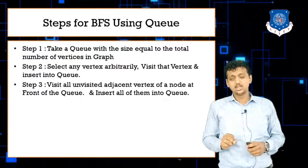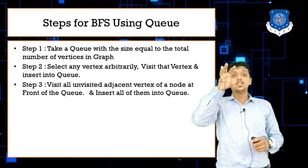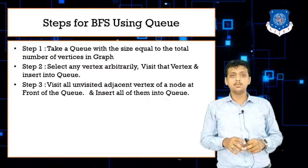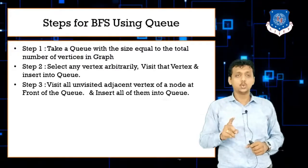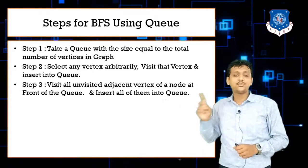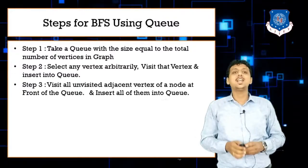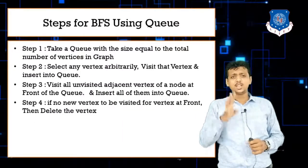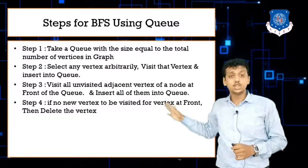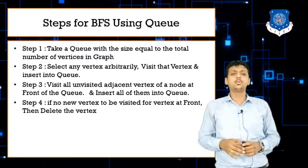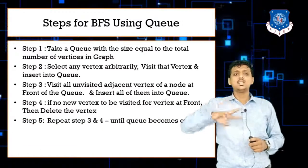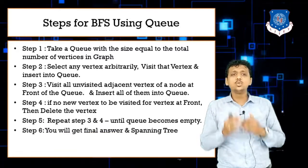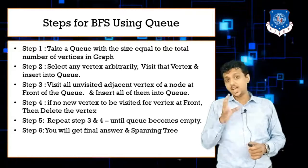Step three: visit all unvisited adjacent nodes of the node at the front position of the queue. First visit the front node, put it in the queue, then visit all its unvisited adjacent nodes. Step four: if there is no new vertex to be visited for the front node, remove it from the queue. Step five: repeat steps three and four until the queue becomes empty and all nodes are visited.